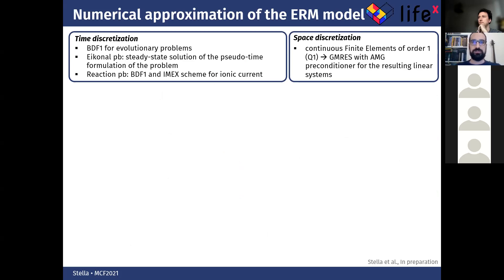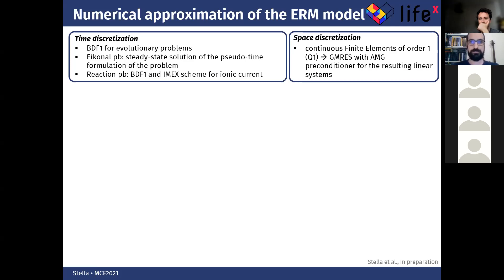About the numerical approximation of the model: for time discretization we use the backward differentiation formula of order one for all evolutionary problems. The eikonal problem is solved with a pseudo-time formulation, and the reaction problem is discretized with a backward differentiation formula of order one and an implicit-explicit scheme for the ionic current. For space discretization, we use continuous finite elements of order one on hexahedral elements, with a GMRES solver with AMG preconditioner for all resulting linear systems.